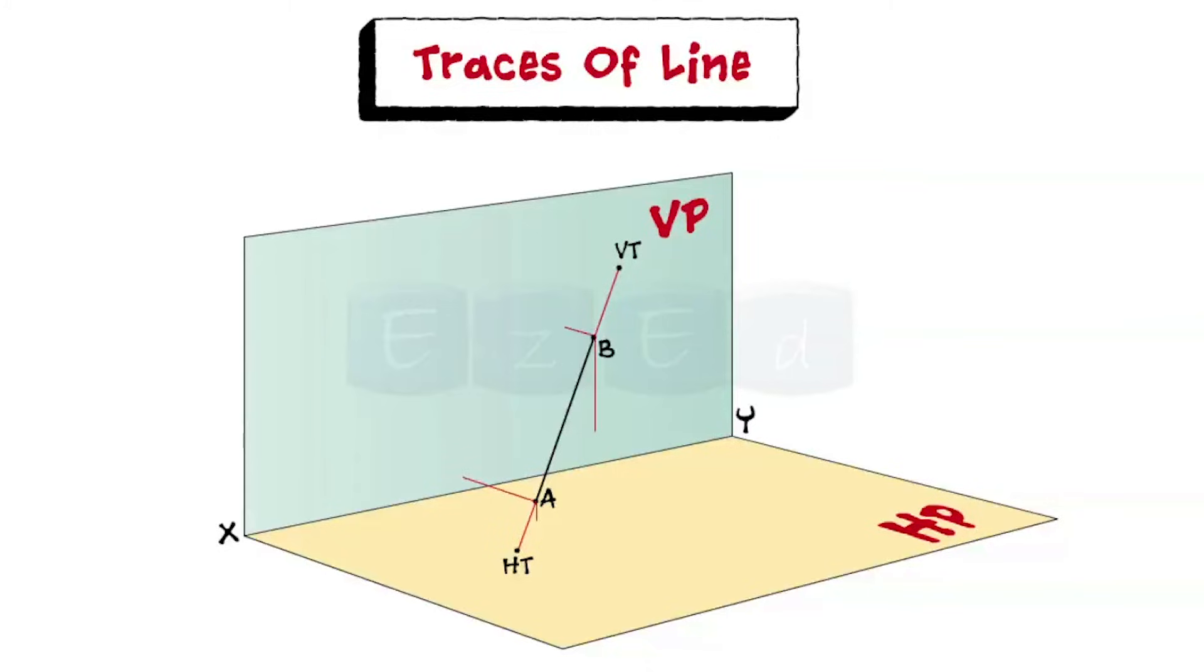Now project line AB in VP and HP to get front view and top view of the line. Now if we extend these lines in front view and top view, we get point H, A dash, B dash and VT in one line and point V, B, A and HD in one line.